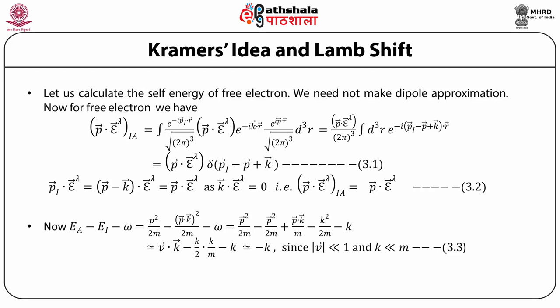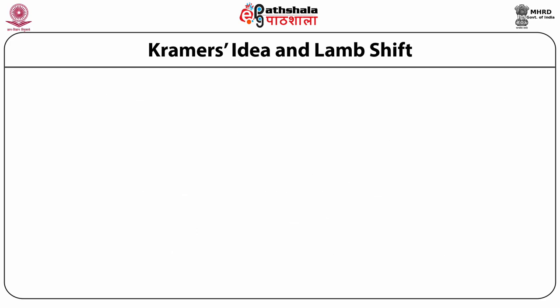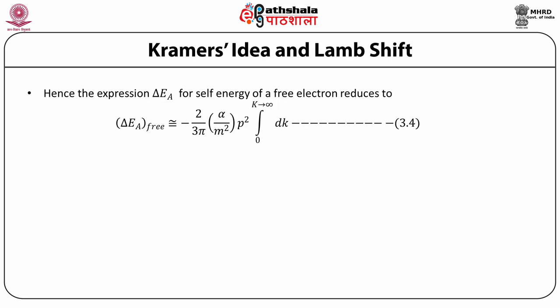Now Ea minus E_I minus omega equals P squared by 2m minus (P vector minus K vector) whole squared by 2m minus omega, which equals P squared by 2m minus P squared by 2m plus P dot K by m minus K squared by 2m minus K. This is closely approximated by V vector dot K minus K/2m minus K, which equals minus K approximately, since V vector is much less than 1 and K is much less than m. Hence the expression delta Ea for self-energy of the free electron reduces to minus 2 over 3 pi alpha by m squared into P squared, integral over dk from 0 to K, where K approaches infinity.